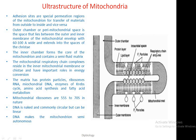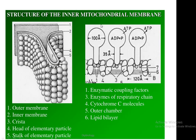The inner chamber forms the core of the mitochondria and contains a semi-fluid matrix. The mitochondrial respiratory chain complexes reside in the inner membrane and play the most important role in energy conversion. The matrix contains protein particles, ribosomes, RNA, mitochondrial DNA, enzymes for fatty acid cycles, amino acid synthesis. Mitochondrial ribosomes are 55S to 70S in nature. The mitochondrial DNA is naked and commonly circular, but linear forms are also available. This DNA makes the mitochondria semi-autonomous.